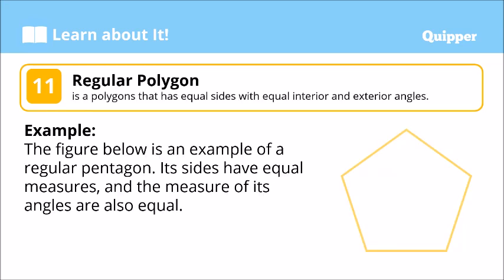Regular polygon. A regular polygon is a polygon that has equal sides with equal interior and exterior angles. This one right here is an example of a regular pentagon — regular pentagon kasi five sides, and regular siya kasi lahat ng sides niya ay equal.